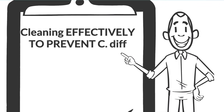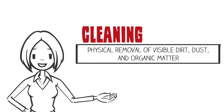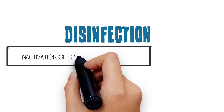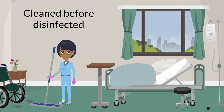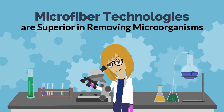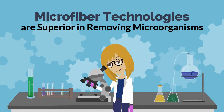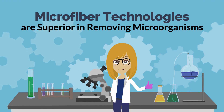Cleaning effectively to prevent C. diff transmission includes both cleaning and disinfection. Cleaning refers to the physical removal of visible dirt, dust, and organic matter. Disinfection, on the other hand, is the inactivation of disease-producing germs. Surfaces must be cleaned before they can be properly disinfected. Best practice recommendations include the use of microfiber cloths and mops. Published studies show that this type of technology, when properly maintained, is proven to be superior in removing microorganisms compared to other non-microfiber textiles.